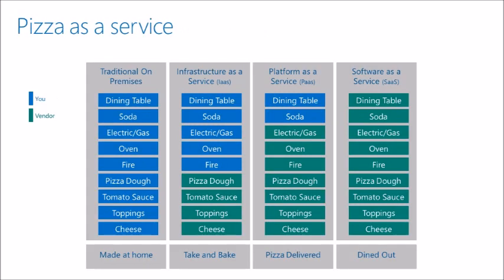This is a fun slide. It describes the various software models in relation to having a pizza for dinner. We can make it all at home, but it seldom comes out perfect. Or, I can buy the raw dough from a bakery and do everything else at home. Or, we can buy a take-and-bake pizza, have a pizza delivered, or simply go to a restaurant. Each of these relates, in essence, to the different types of services that you experience in the cloud.